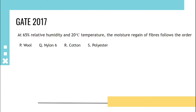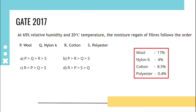At 65% relative humidity and 20°C temperature, the moisture regain of fibers follows a specific order. Given wool, nylon 6, cotton, and polyester, we arrange them by moisture regain values: wool has 17%, nylon 6 has 4%, cotton has 8.5%, and polyester has 0.4%. Arranging in order: wool > cotton > nylon 6 > polyester. The answer is option B.